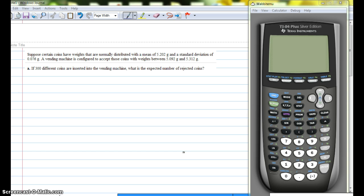It says, suppose certain coins have weights that are normally distributed with a mean of 5.202 grams and a standard deviation of 0.076 grams. A vending machine is configured to accept those coins with weights between 5.092 grams and 5.312 grams. Again, your numbers might be slightly different.